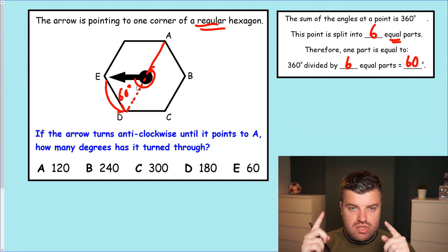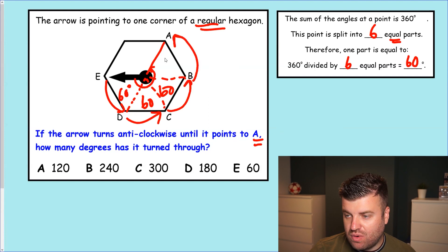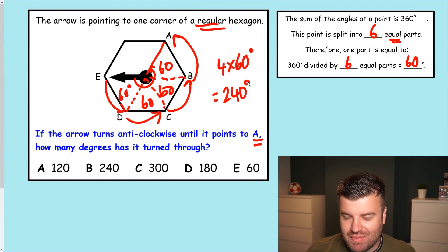So for the arrow to go from E to D, that would be 60 degrees. But the question is not asking us to go to D, it's asking us to go to A. So we need another 60 degrees here. We need another 60 degrees here. And one final lot of 60 degrees here. That's four lots of 60 degrees. Therefore, the answer is 240 degrees. With this method, we're going to solve these questions accurately every single time. The answer here is going to be B.